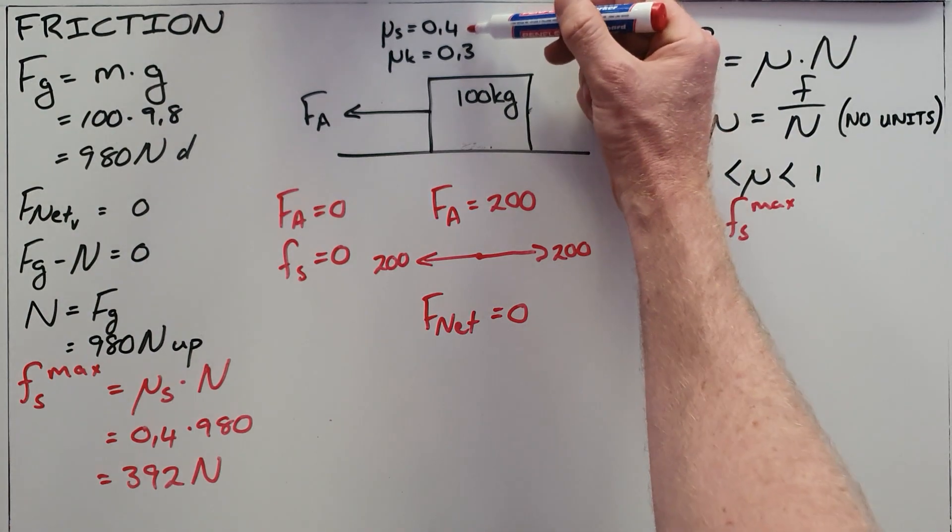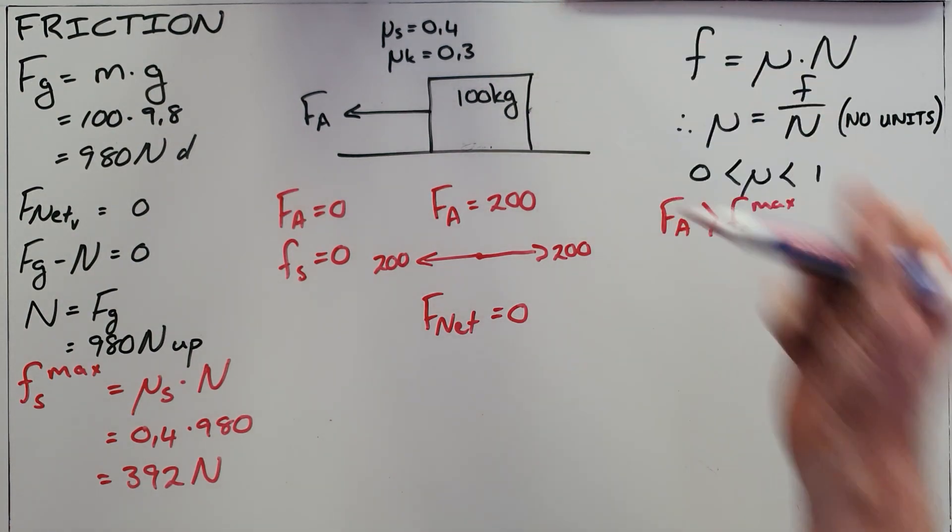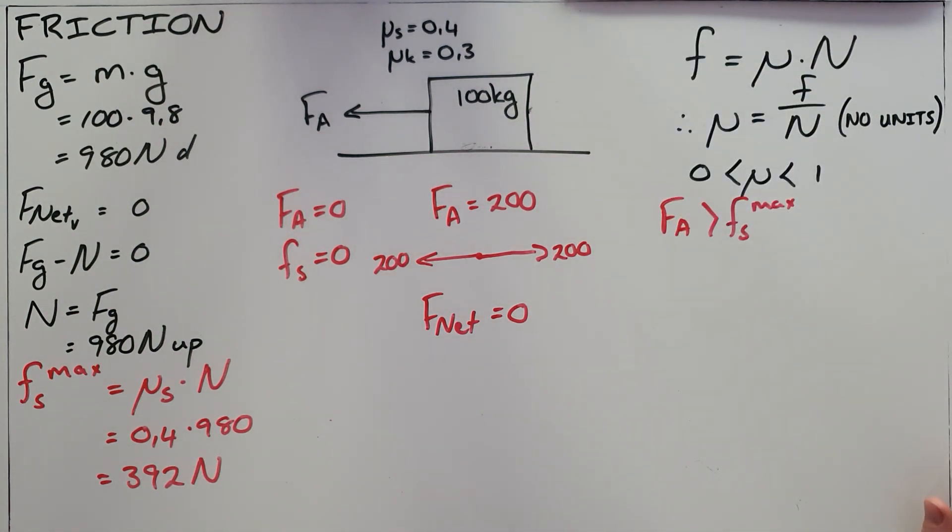The reason why static friction is generally higher than kinetic friction is because the two surfaces tend to form a cold weld in which the molecules of their surfaces overlap with each other and essentially stick together like two pieces of sandpaper that are overlapping.